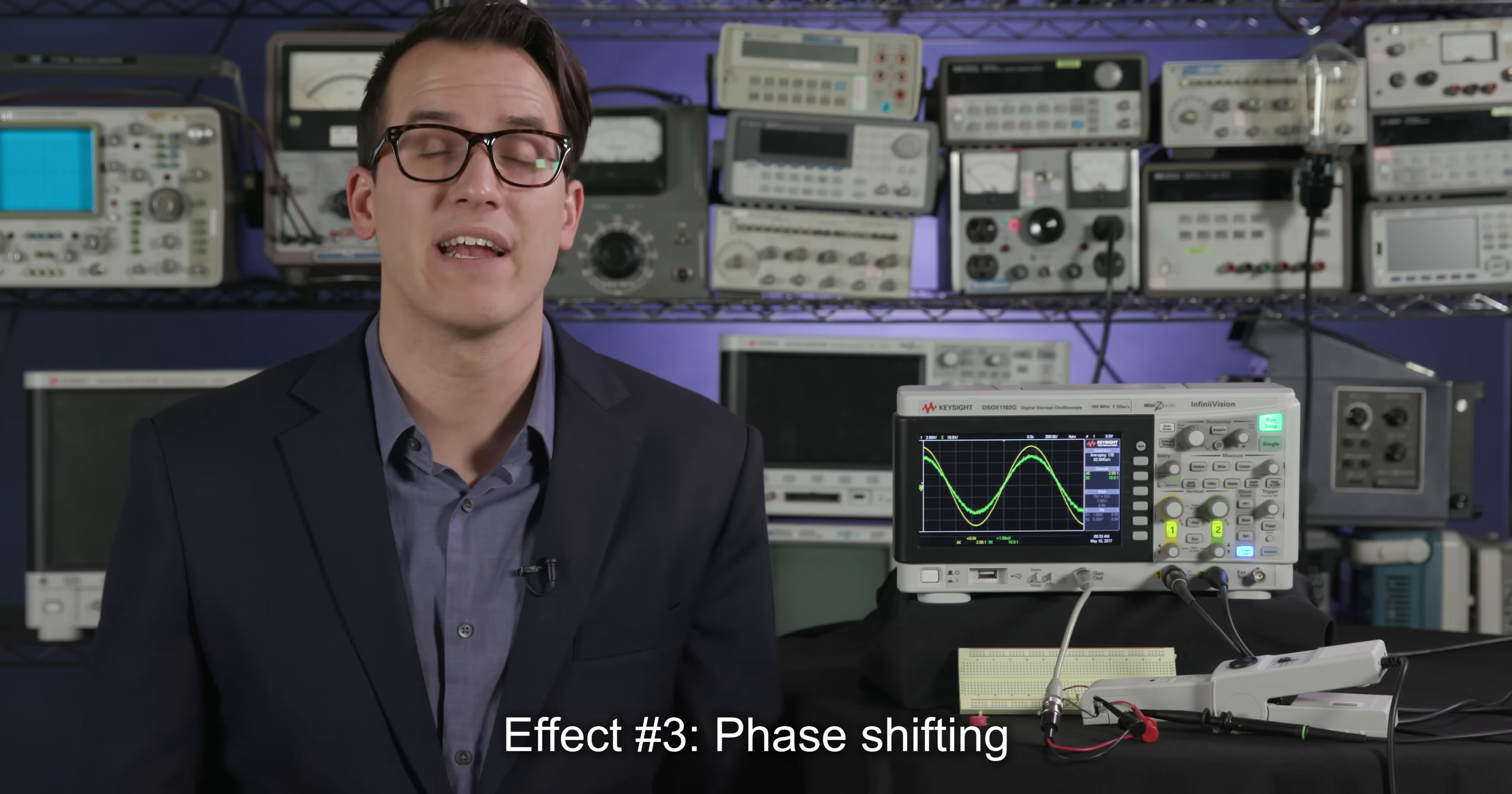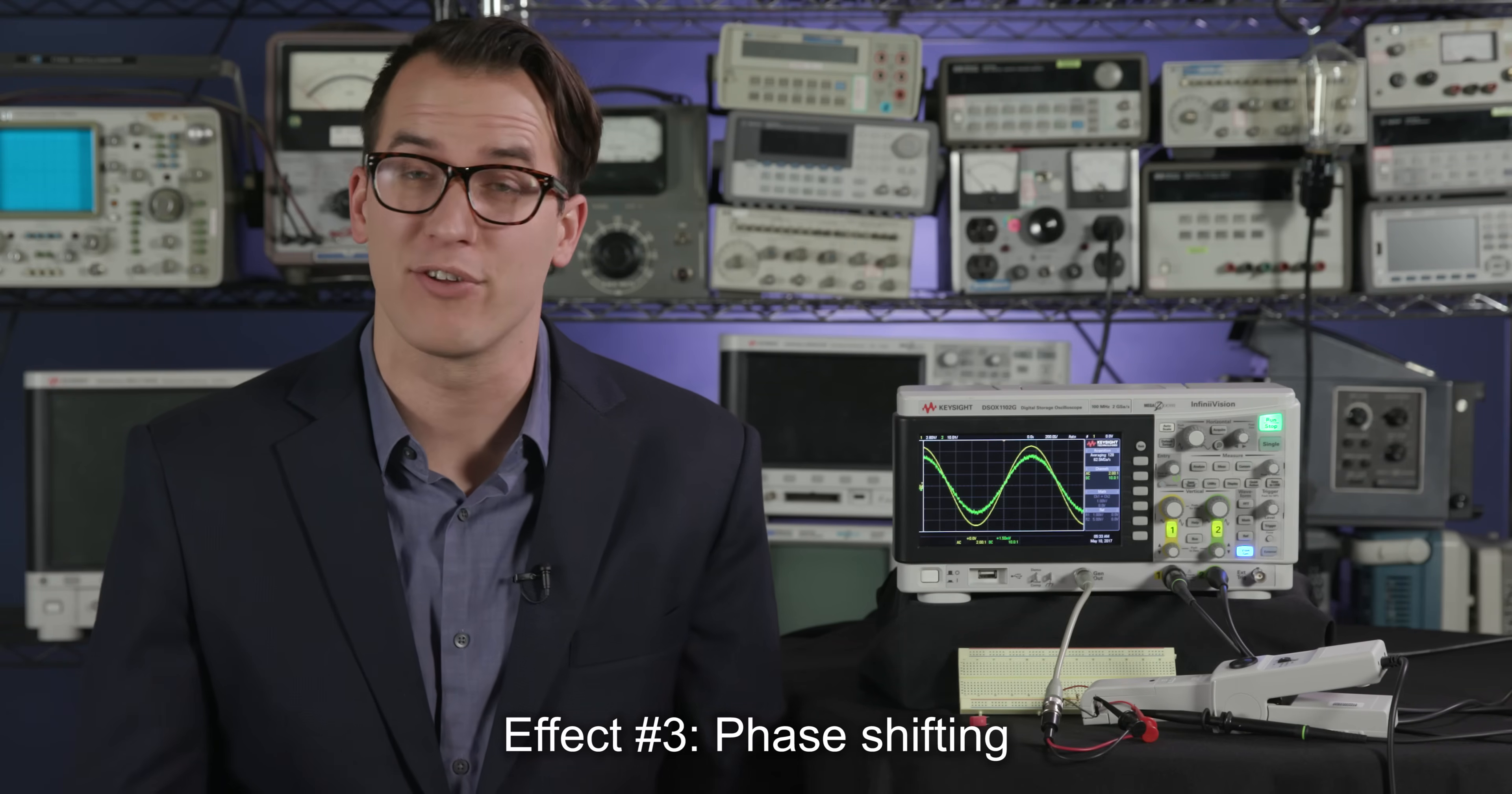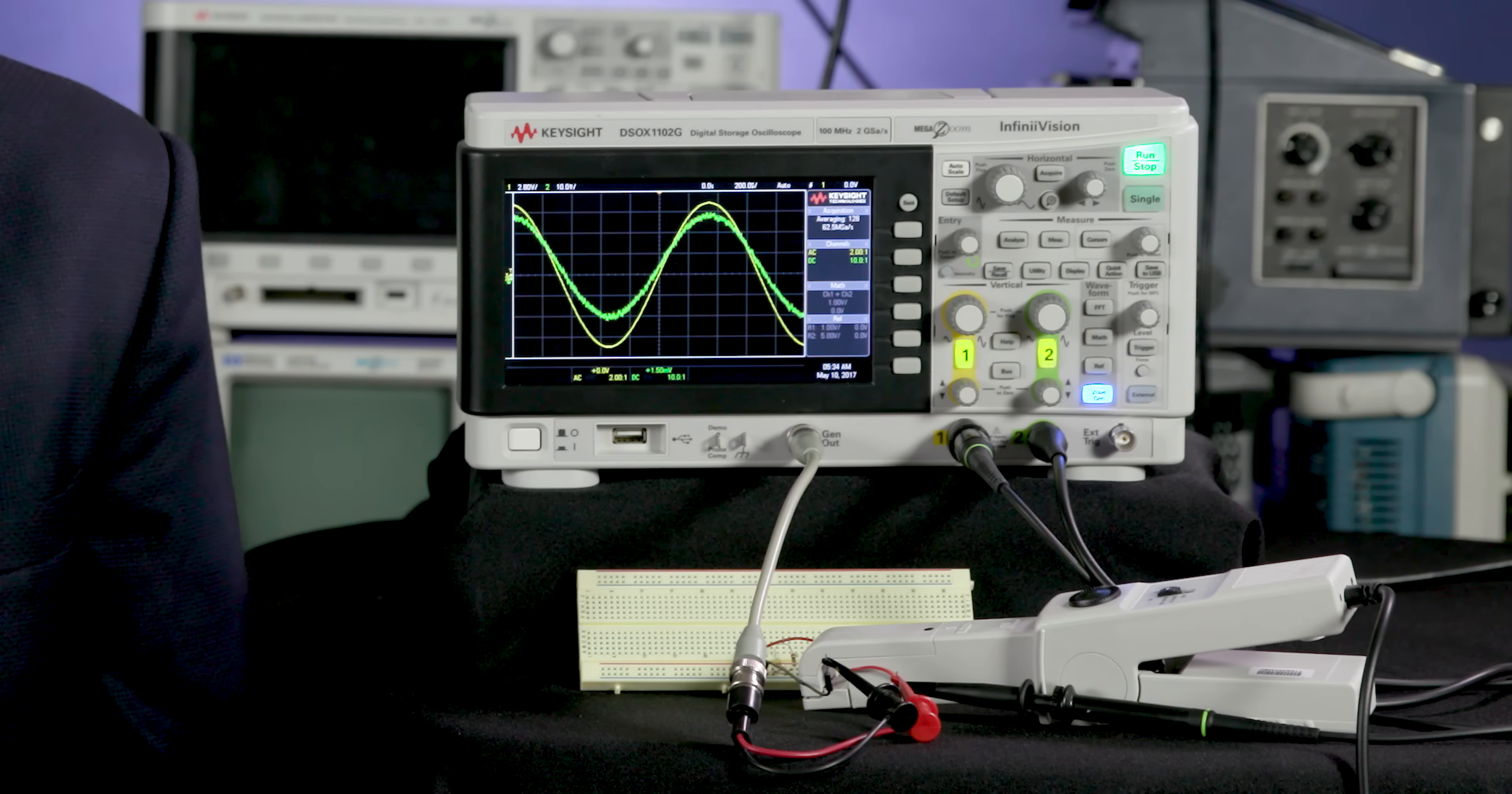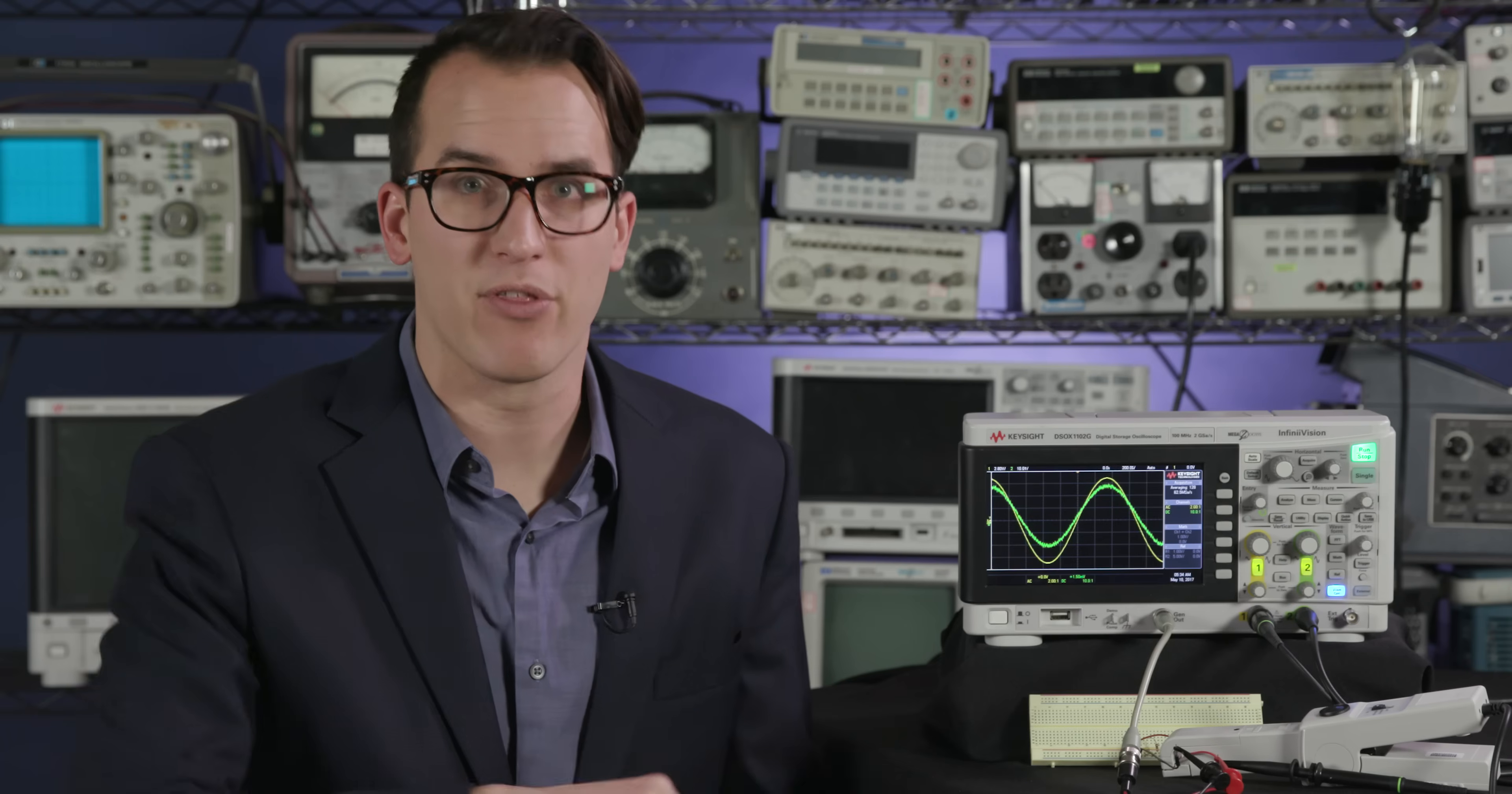The third effect of capacitance is that it can change the phase relationship between voltage and current. So I've hooked up a current probe to channel two and I put the scope in averaging mode like I like to do with this current probe. And you can see right now my voltage and current are in phase, they're both rising and falling at the same point in time.